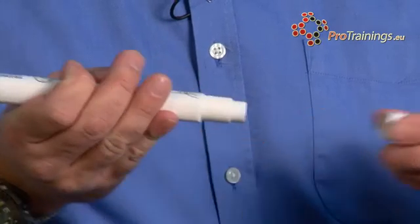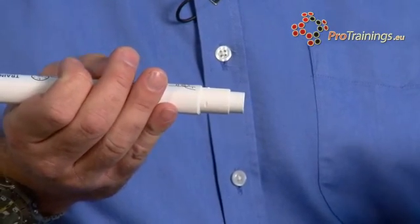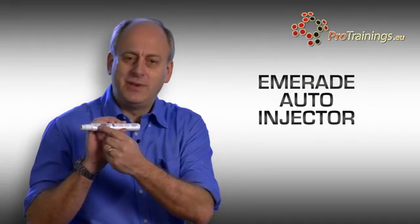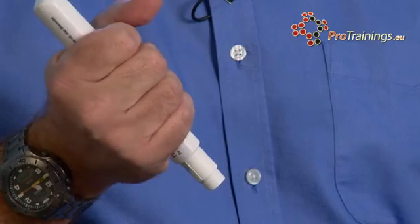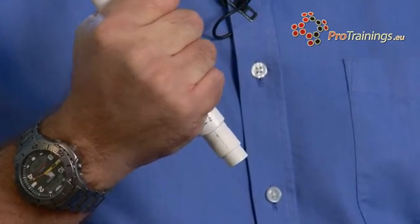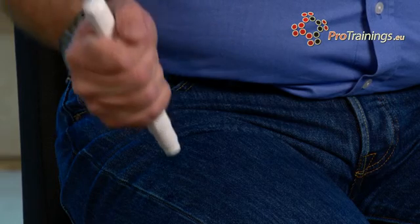To start with, you would just remove the cap and you can lay that down. On the actual unit, it has full instructions on how to use the unit. So with this one, grip it into your hand, then place it onto exactly the same place as you do with others in the top part of the thigh.